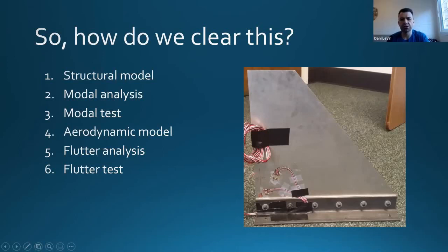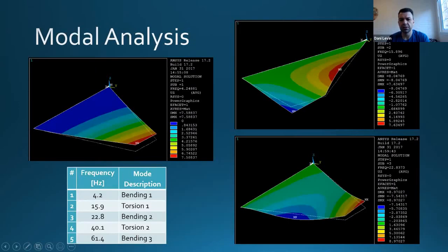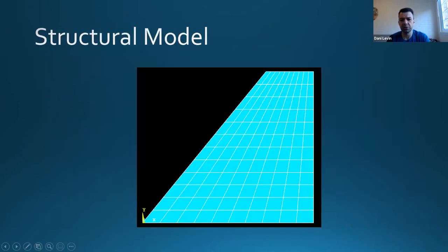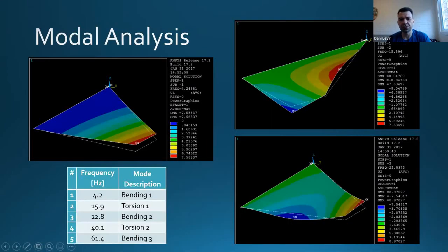Let's start with the structural model. It's built in ANSYS and because it's a flat plate, it's very logical to use plate or shell elements. This is the discretization — a very simple model that takes a very short time to build. The modal results show the first bending at 4.2 Hz, then the first torsion, then second bending, and higher modes which are less relevant.